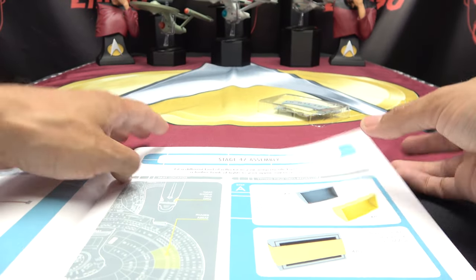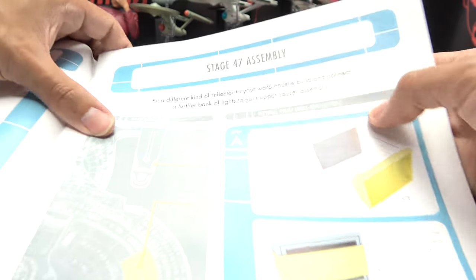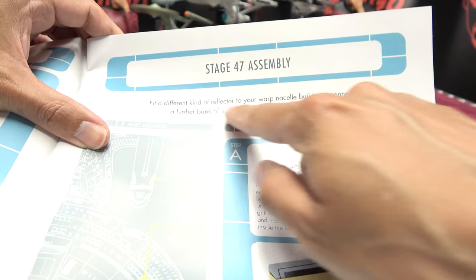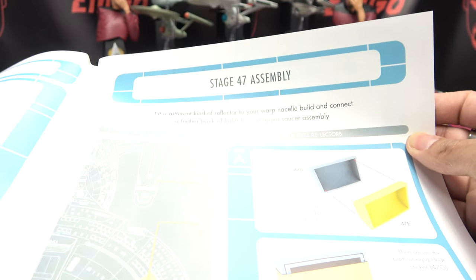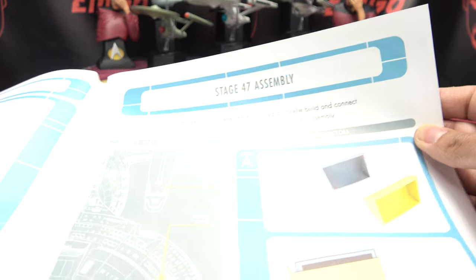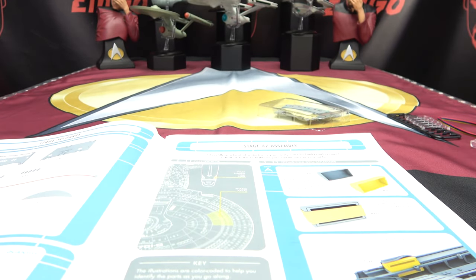So we are here. We are here. Stage 47. And in this stage, we're going to fit a different kind of reflector to your warp nacelle build and connect a further bank of lights to your upper saucer assembly. Cool. Cool. Okay.